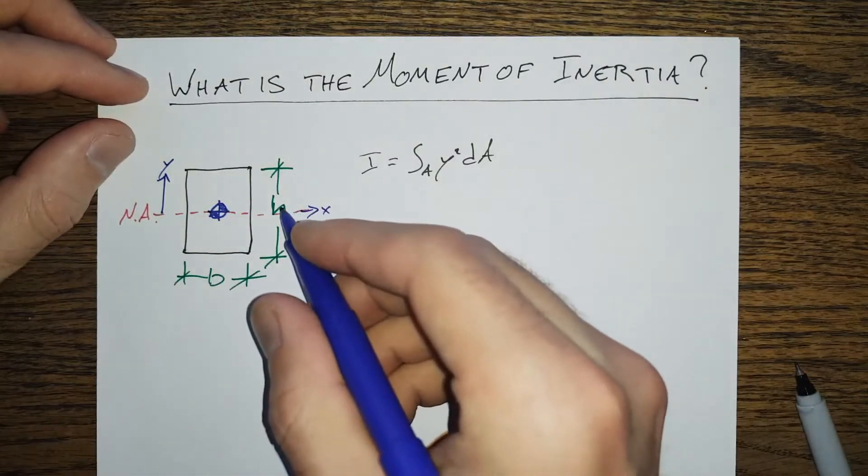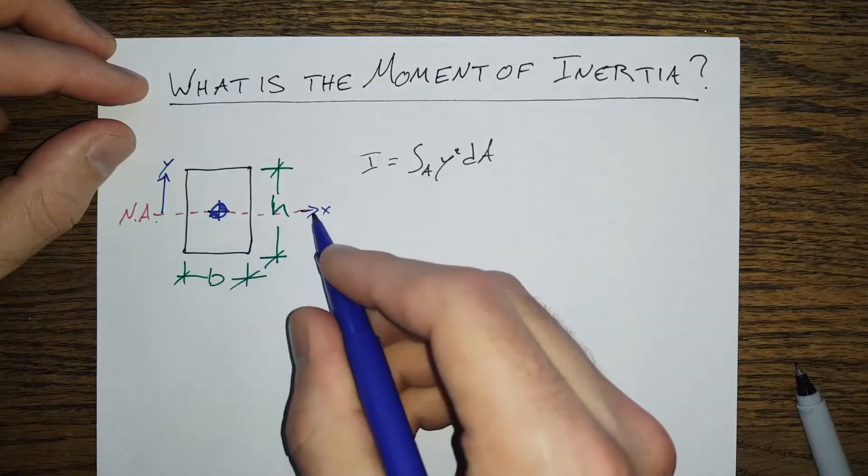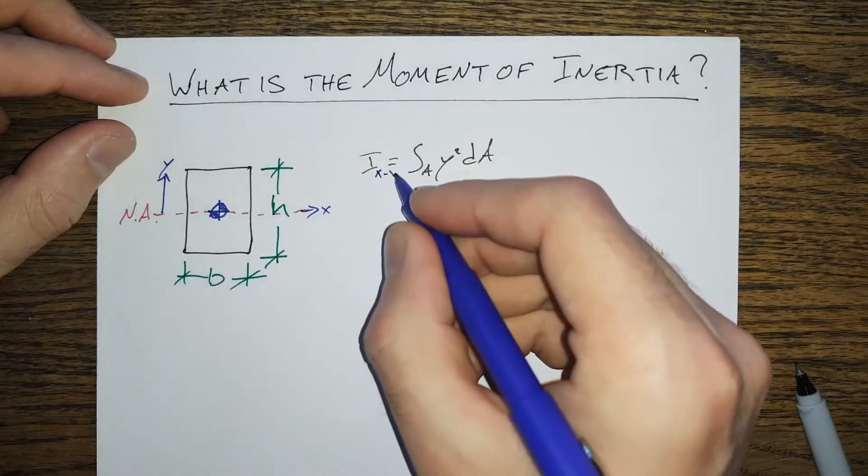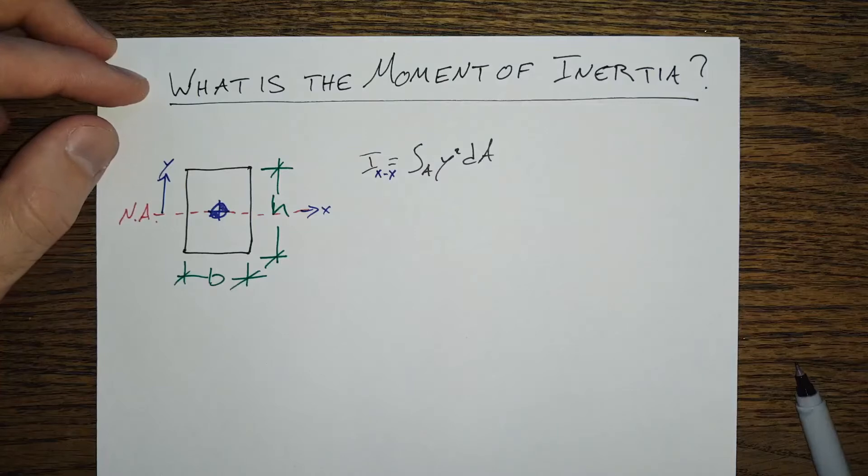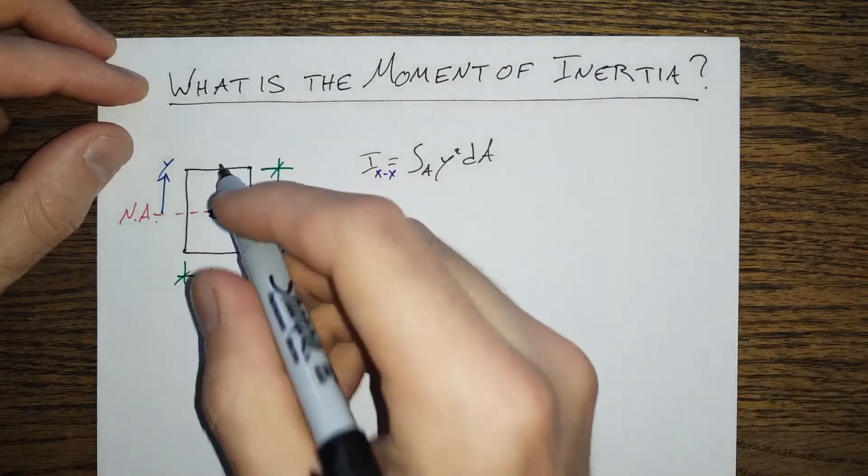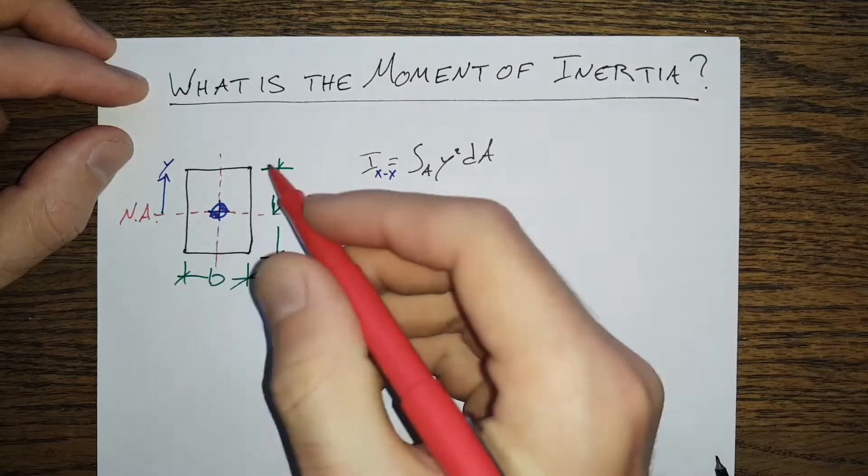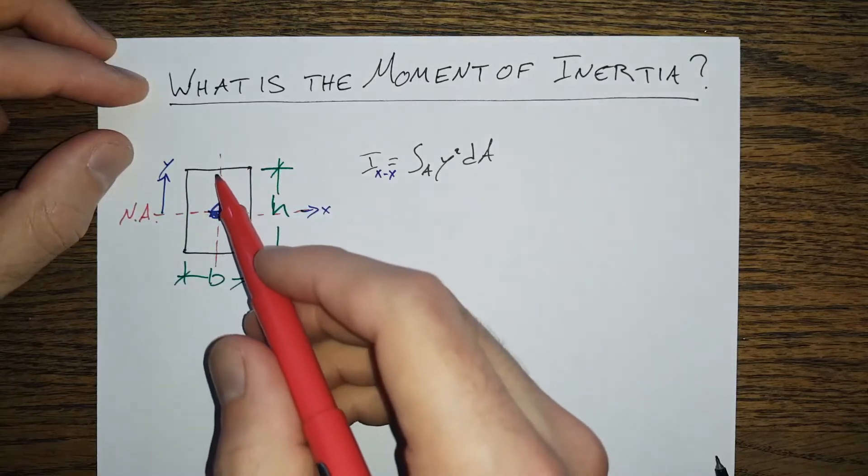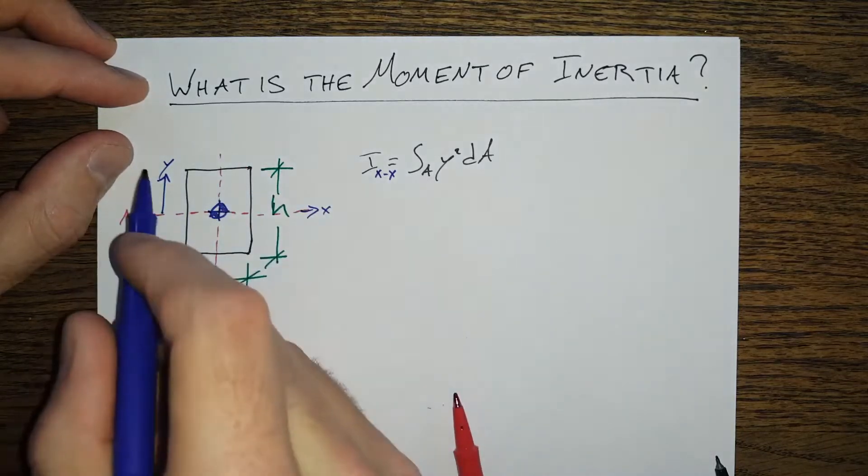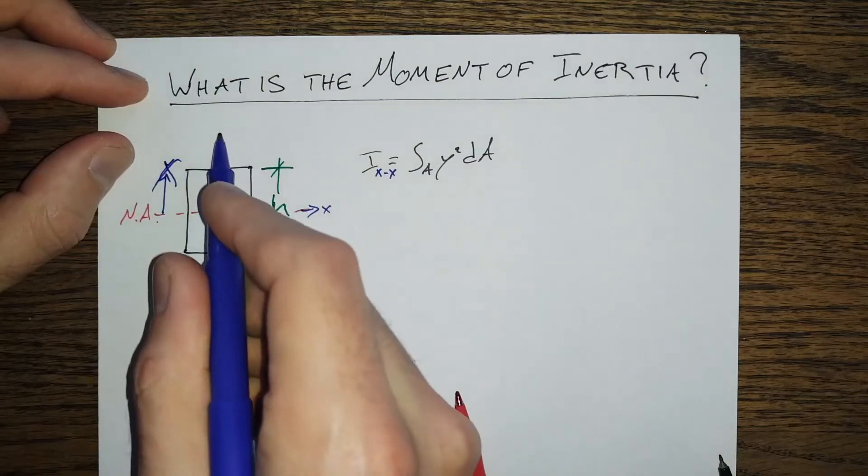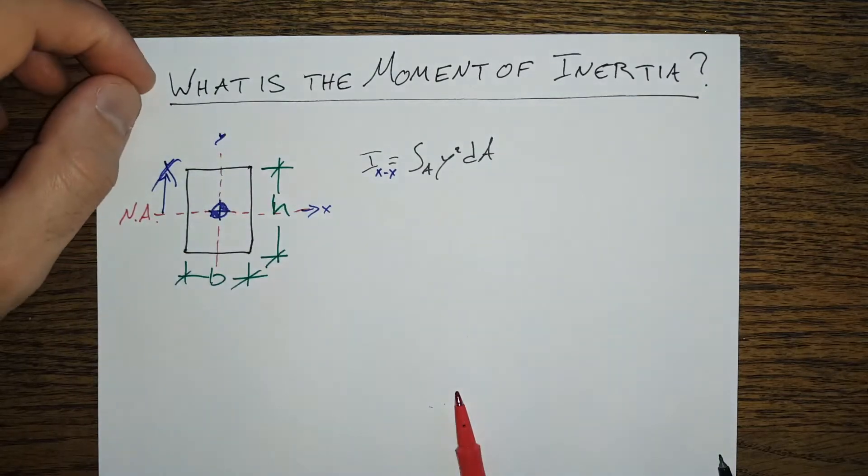So we've got here a moment about the x axis, so Ixx is going to be this Ixx here, and we could also potentially do a moment of inertia or a second moment of area about a y axis that would be more reasonably centered here for this basic discussion.